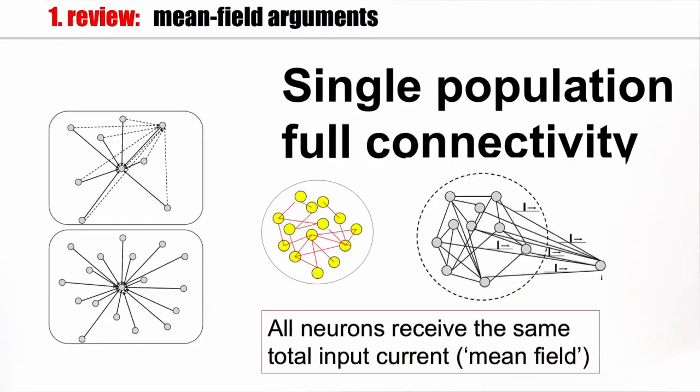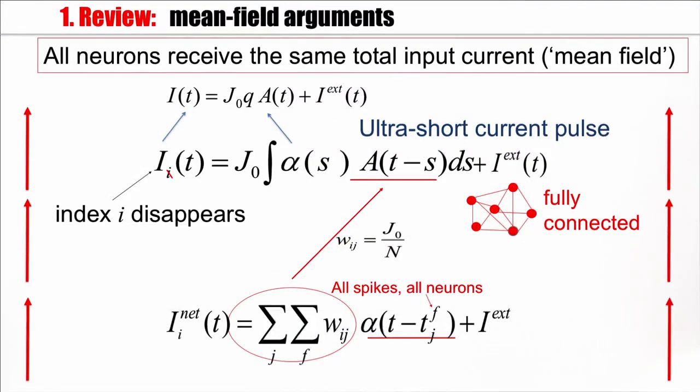So far, we just looked at one single population. And we found that in this single population, if it's fully connected, then each neuron receives the same total input current. So each neuron sees the same mean driving field, and that's why it's called a mean field theory. Here's a summary slide of the argument. If you look at the input to neuron i, and if we say that each spike contributes some synaptic current, we sum up, and since the interactions are all identical, so each connection has the same weight, then this sum over all spikes, all neurons, just gives the population activity.